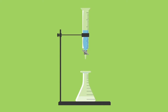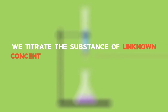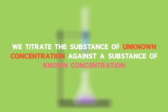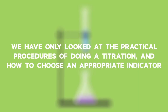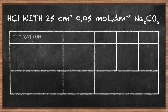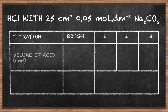In the last lesson, we found out how to carry out a titration to determine the concentration of an acid or a base. Remember, we titrate the substance of unknown concentration against a substance of known concentration. We have only looked at the practical procedures of doing a titration and how to choose an appropriate indicator. Now, we will use the results of a titration in calculations.